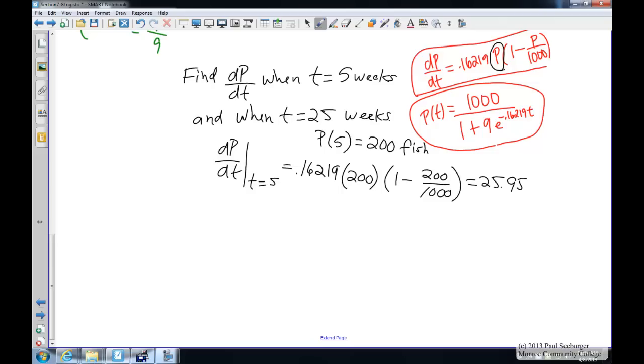And the units on this would be 25.95. And the units would be, well, let's see, it's dp/dt. So dp, p is in fish. t is in weeks. So this would be per week. 25.95 fish per week. About 26 fish per week is the rate of change at 5 weeks.